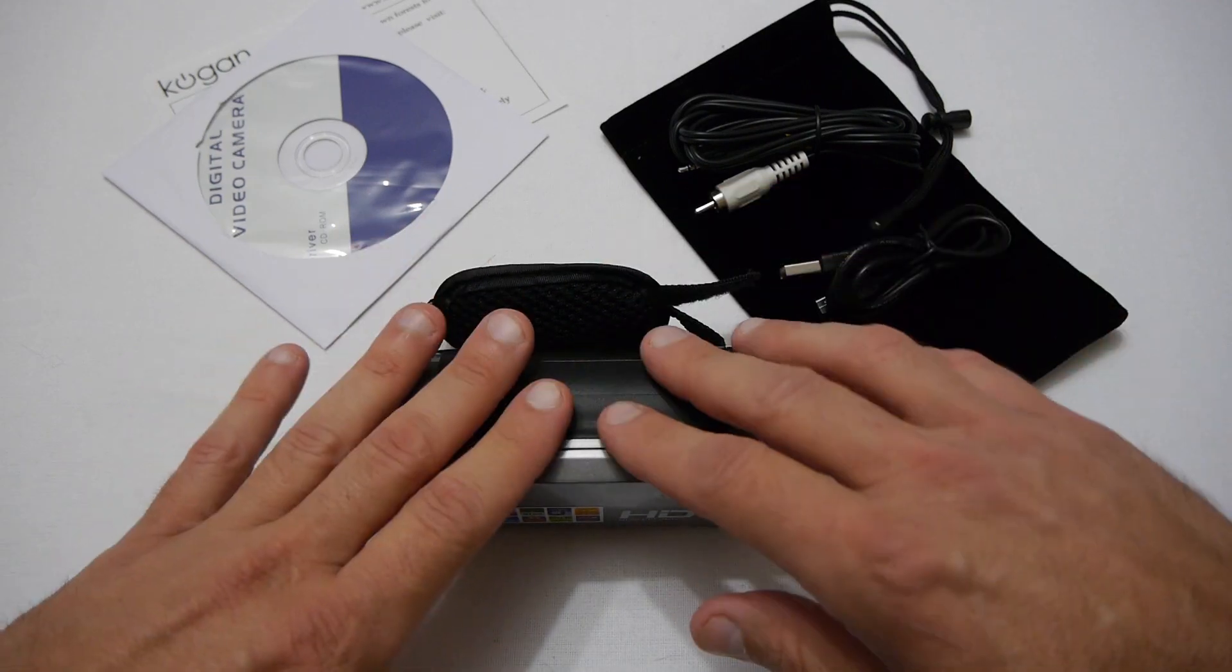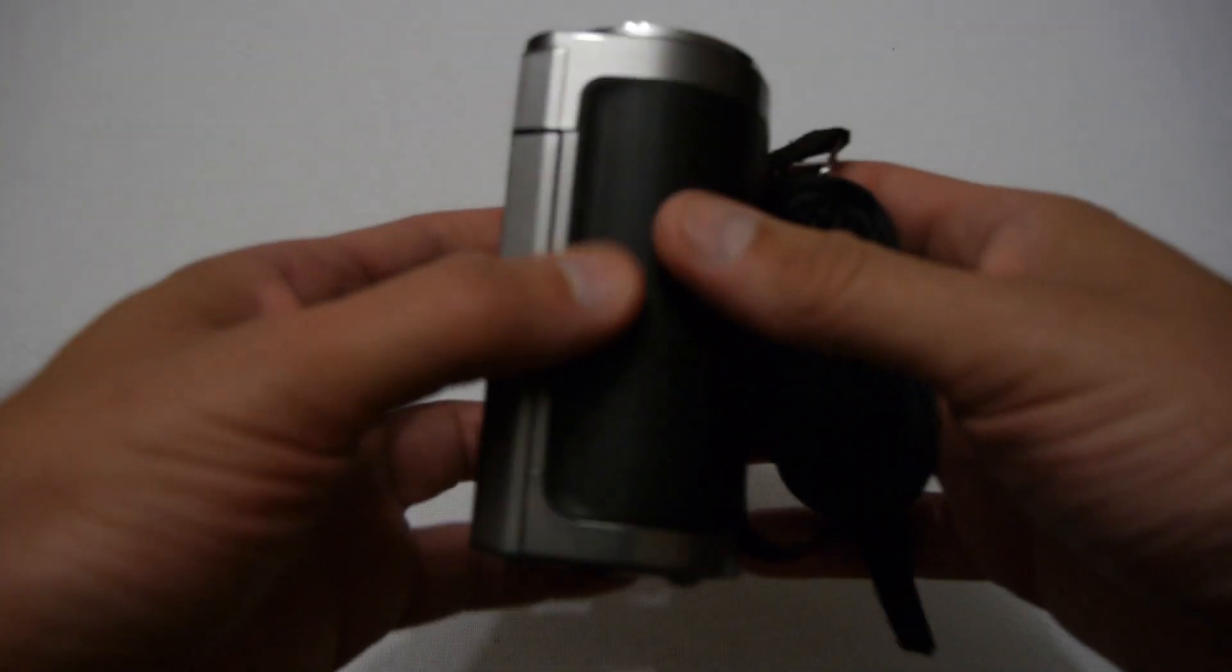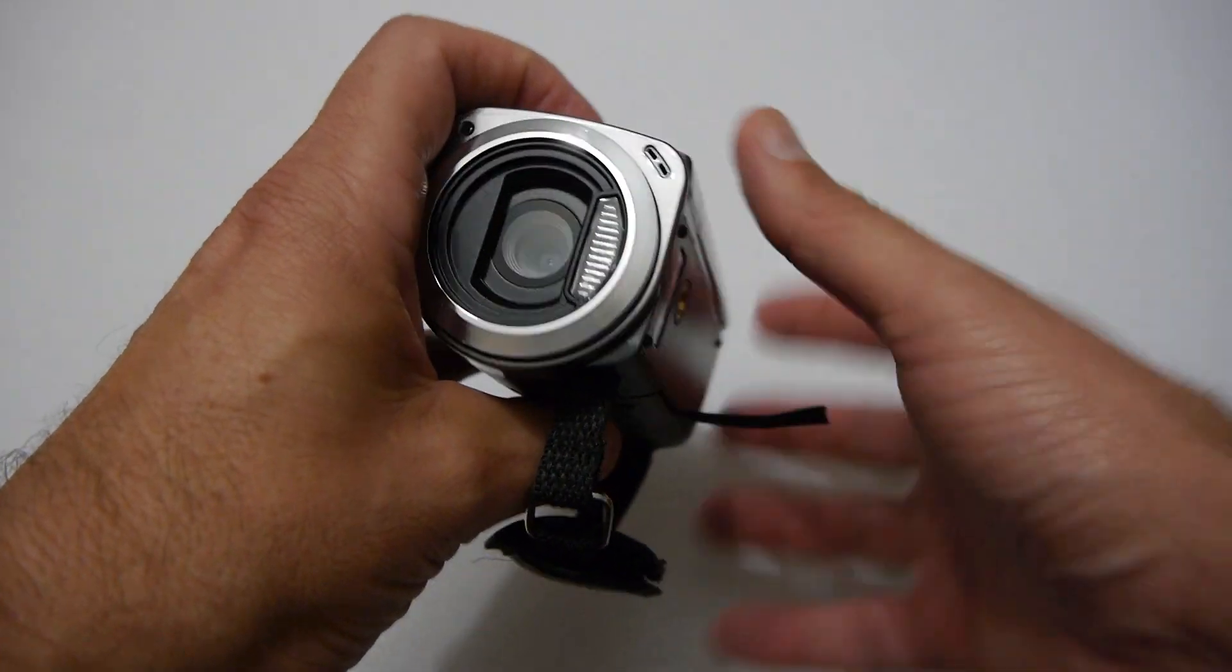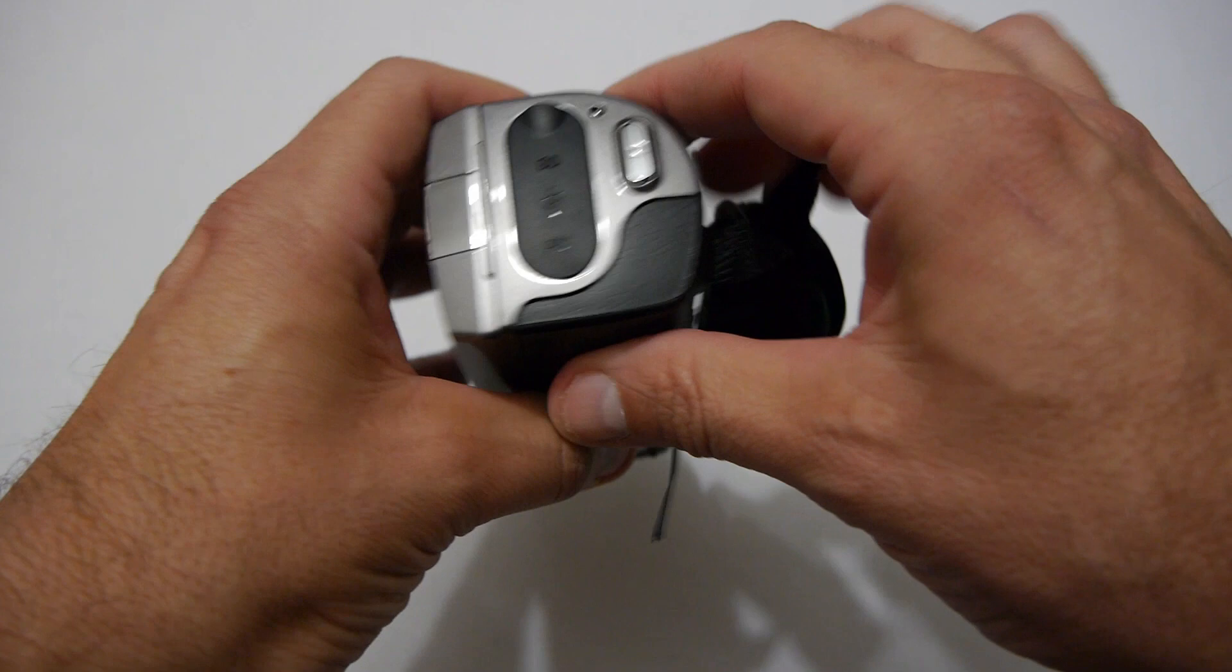Okay so this is the camera itself and as you can see there's not much to it. You've got a little light on the front for video and stills which is quite nice.